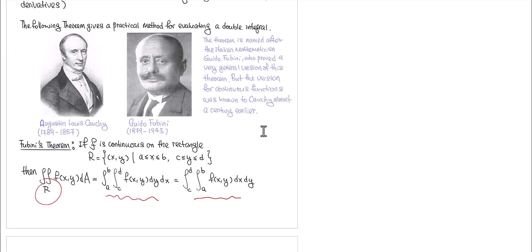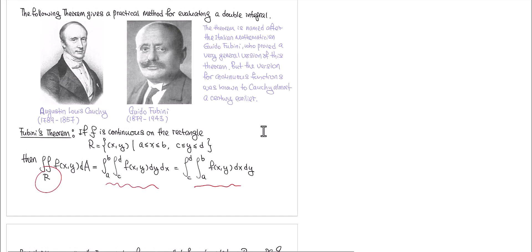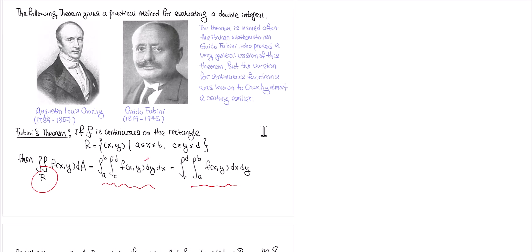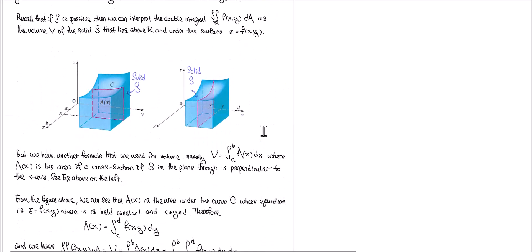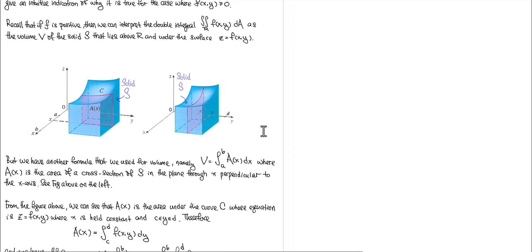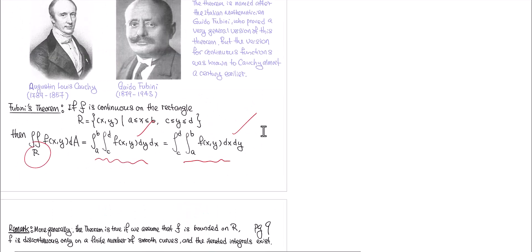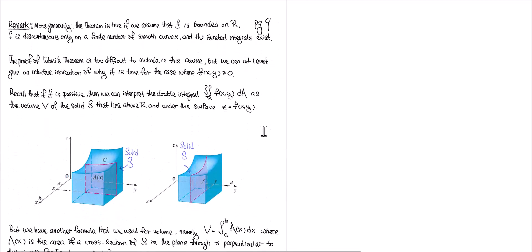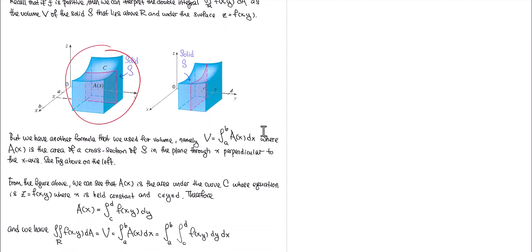Fubini — an Italian mathematician — says that the volume of that region is the same as this iterated integral, and also the same as the other iterated integral with reversed order. The idea is very intuitive. The conditions are simple: f just has to be continuous on the rectangular region. Under those conditions, the volume of the region below f(x,y) and above the rectangular region R can be computed using iterated integrals.